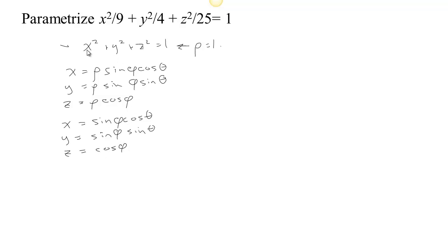That would be great if we didn't have any numbers underneath these variables. Notice that these have the property: if you compute x squared plus y squared you get sin²φ cos²θ plus sin²φ sin²θ, which equals sin²φ. And z squared is cos²φ. So x squared plus y squared plus z squared equals sin²φ plus cos²φ, which equals 1. So these three expressions have the property that when you square each and add them up, you get 1. Our idea then is: we need to square and divide by 9, divide by 4, and divide by 25, add up and get 1.